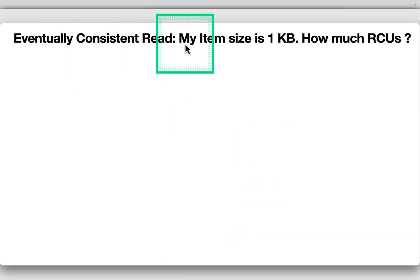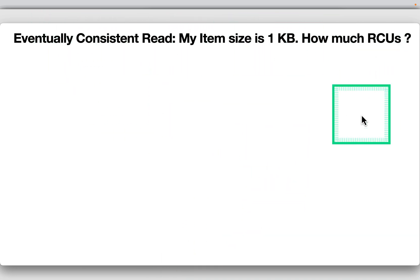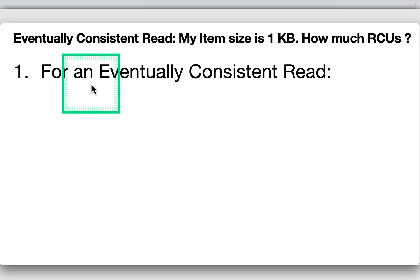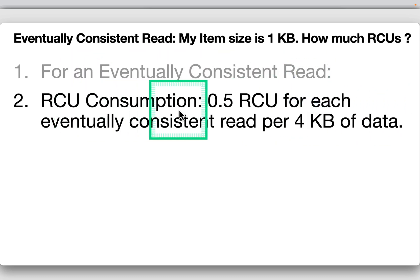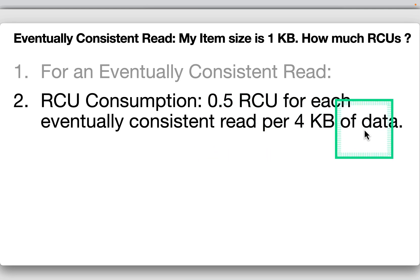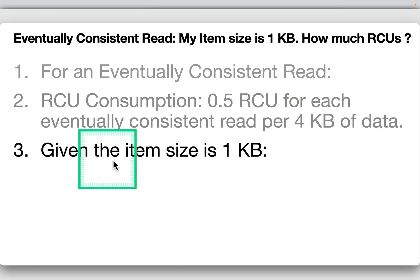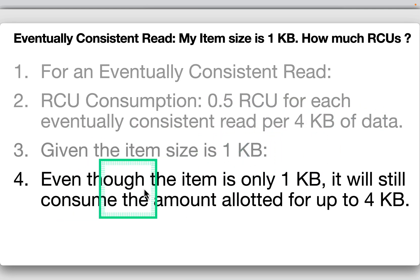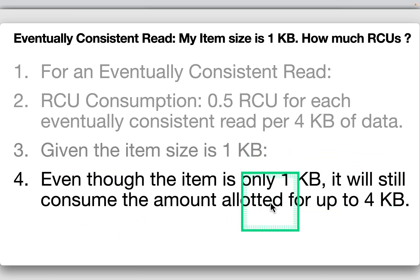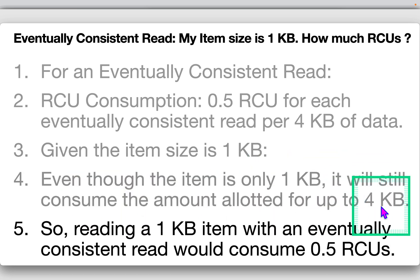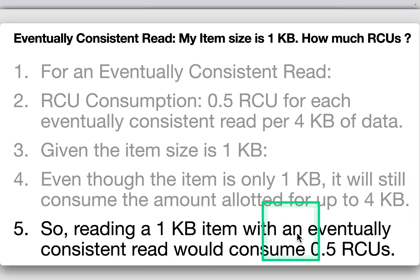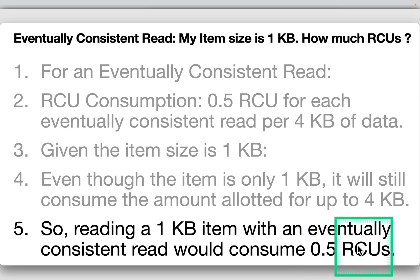For an eventually consistent read of a 1KB item: the consumption is 0.5 RCU per eventually consistent read per 4KB. Even though the item is only 1KB, it still consumes the amount allocated for up to 4KB. So reading a 1KB item with an eventually consistent read consumes 0.5 RCUs.